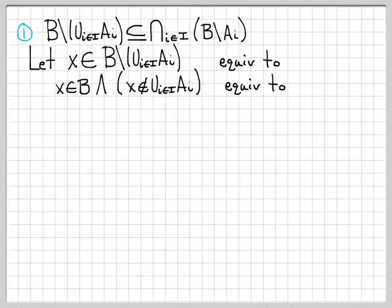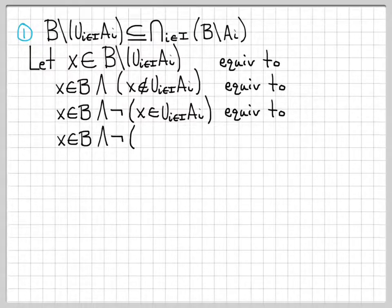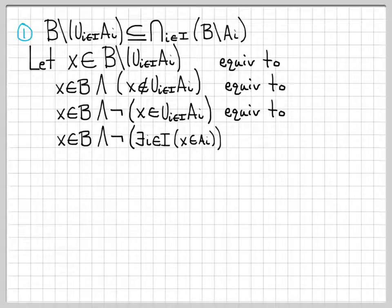Let's keep going. We have X is an element of B, and we can simplify the second part. If X is not in the set, we can write this as 'not X in the set' — so instead of saying X is not in the set, we say it is an element of the set but then negate it. This is equivalent to X is in B and not: there exists some i in capital I such that X is in A_i. If X is in the union, there has to be at least one A_i containing X, so there must exist a little i such that X is in A_i.